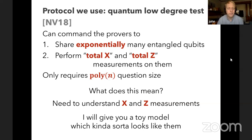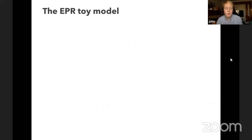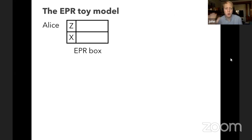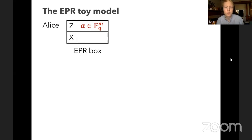I'll give a toy model — the EPR toy model — that captures the interesting properties. Alice and Bob share an entangled quantum state, but I'll focus on Alice's side. Forget about qubits; all Alice has access to is an EPR box with two registers: one labeled Z containing a string a in F_q^m sampled uniformly at random, and one labeled X containing a string b in F_q^m sampled uniformly at random and independently of a.